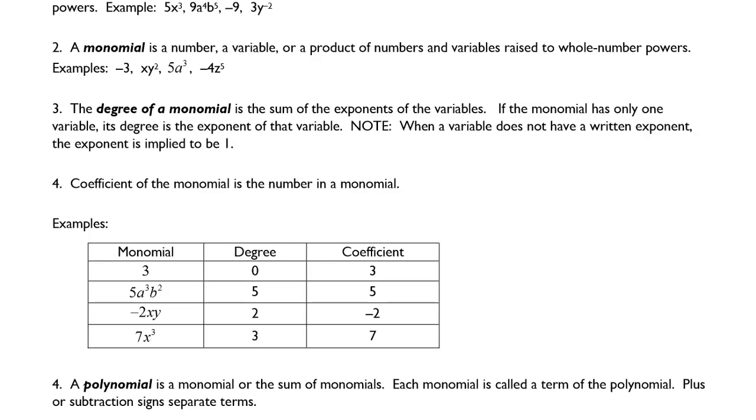The degree of a monomial is the sum of the exponents of the variables. That might not make a ton of sense yet, but let's try this. If the monomial has only one variable, its degree is the exponent of that variable. When a variable does not have a written exponent, the exponent is implied to be 1.